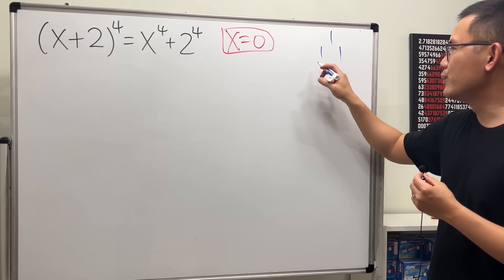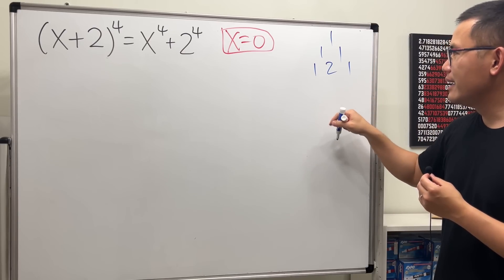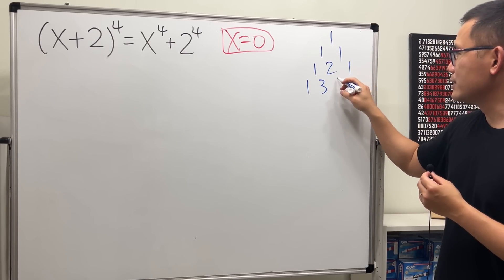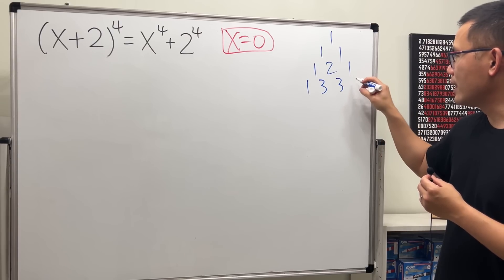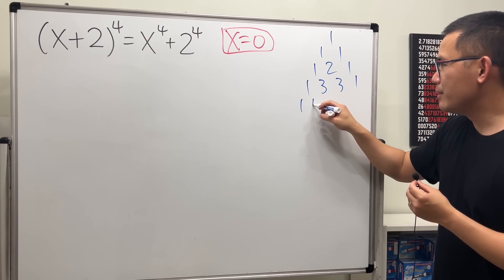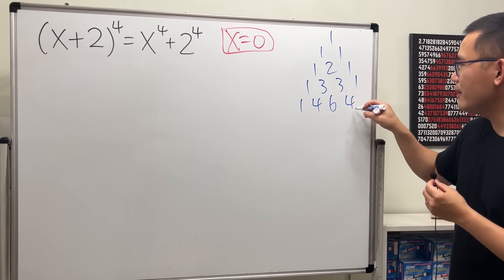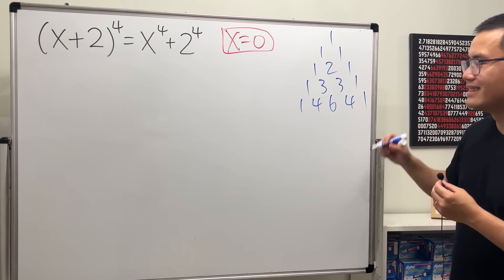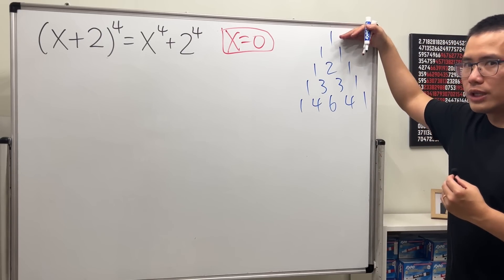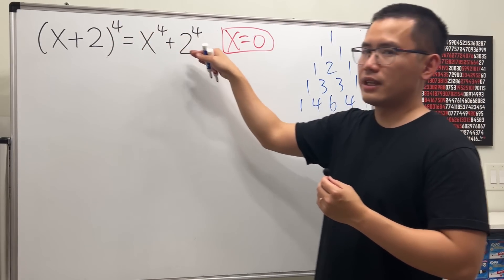Starting Pascal's triangle with 1, then 1 1, then 1 2 1, then 1 3 3 1, and then 1 4 6 4 1. Stop right here. The first row is for the zero power — if the power is zero, you just get 1.